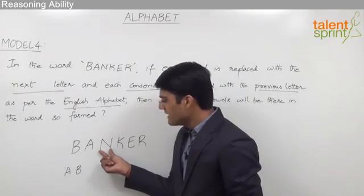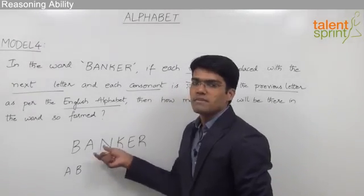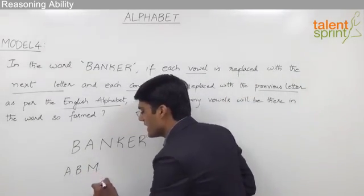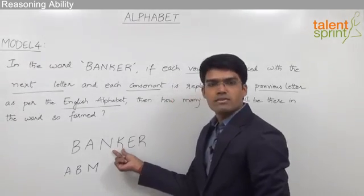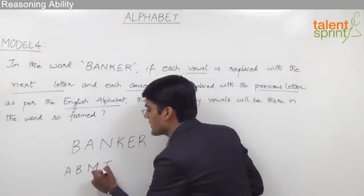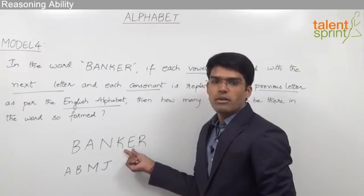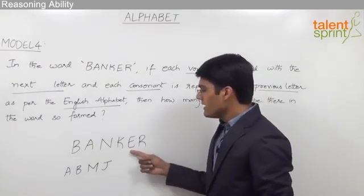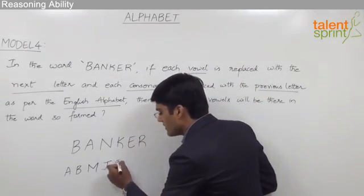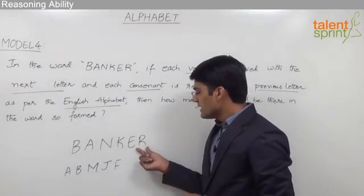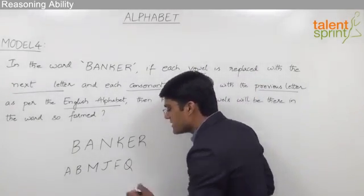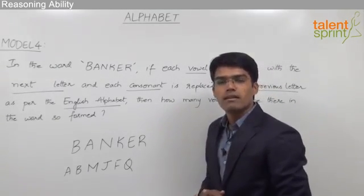Moving on to the next letter N: N is a consonant and should be replaced with the previous letter, which is M. Similarly, K is also a consonant and should be replaced with its previous letter J. Coming to E, as it is a vowel, it should be replaced with the next letter F, as F comes after E in the English alphabet. Finally, the letter R is a consonant, so R should be replaced with Q, as Q comes before R in the English alphabet.